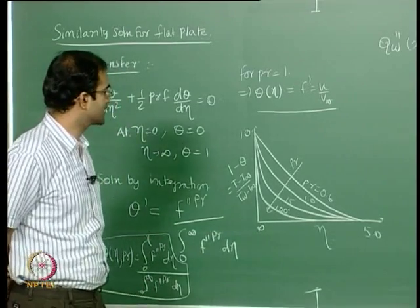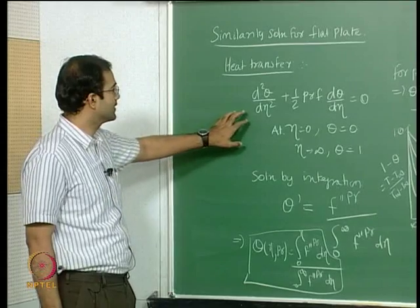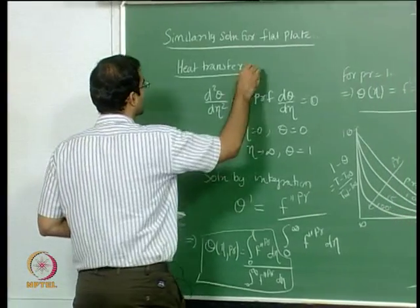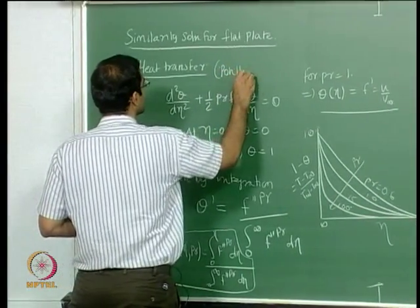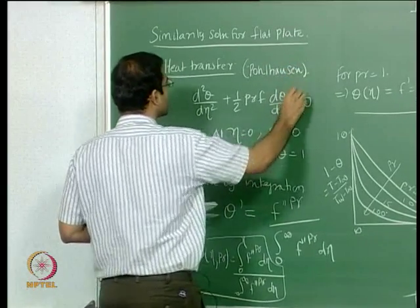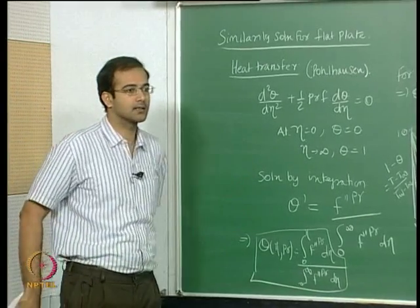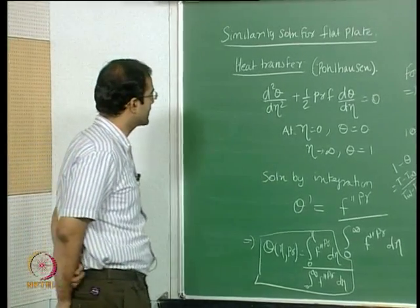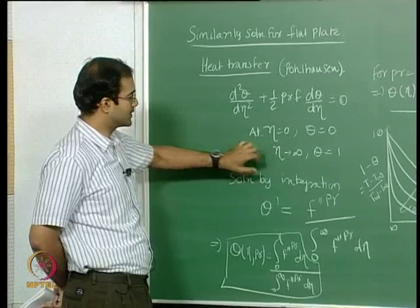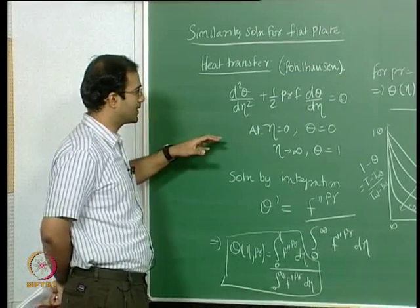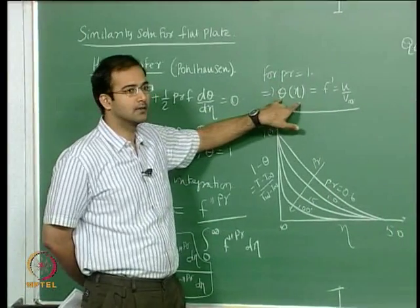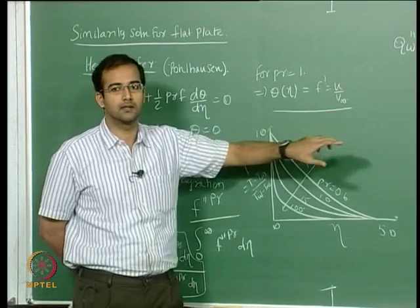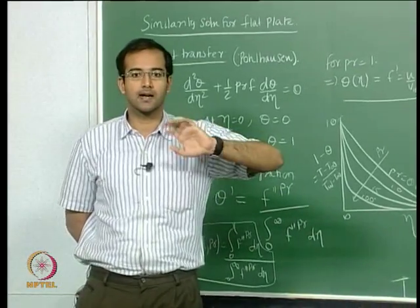Where we stopped yesterday, we were looking at the solution for heat transfer similarity solution. This is also called the Pohlhausen similarity solution, named after Pohlhausen who continued the velocity boundary layer similarity solution of Blasius and extended that to thermal boundary layers. We saw the derivation of this particular expression subject to these boundary conditions, and you know from intuition that for Prandtl number equal to 1, if you replace the non-dimensional temperature θ with the non-dimensional velocity, the momentum and temperature equations are identical.